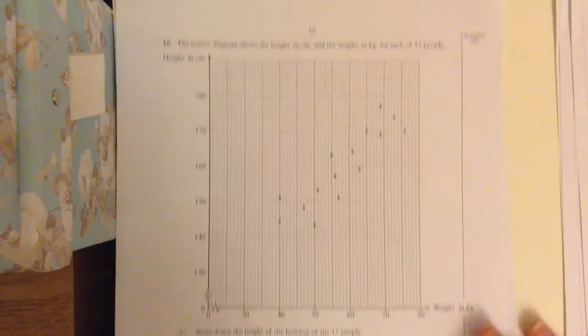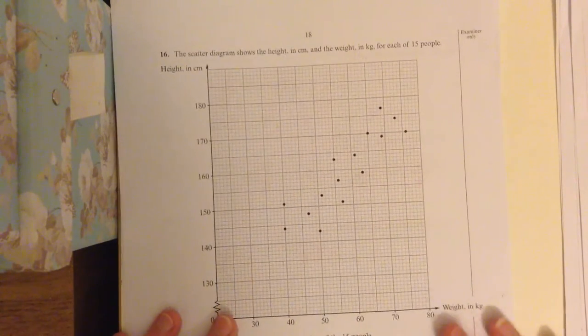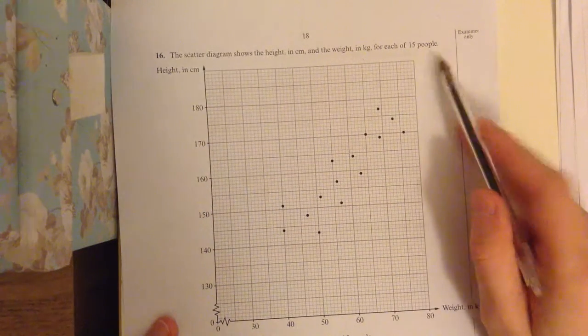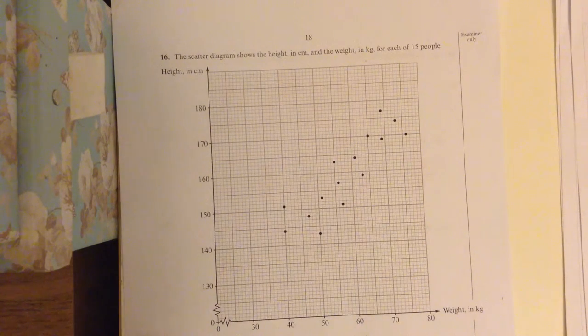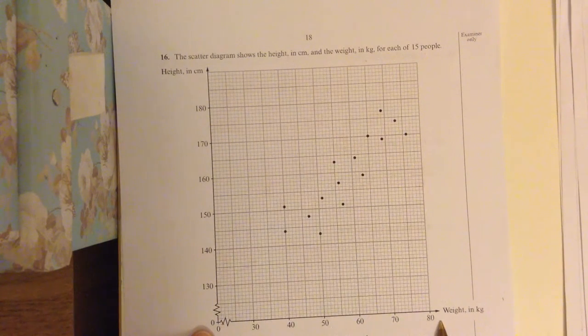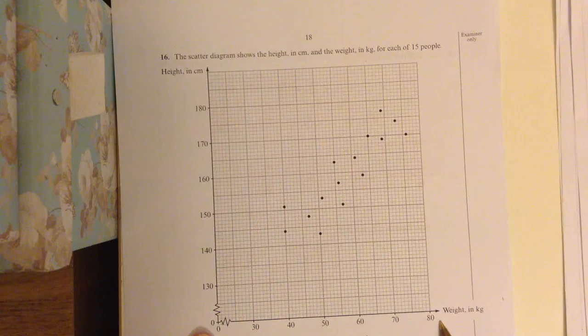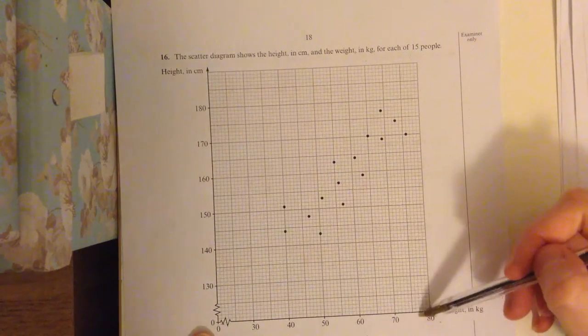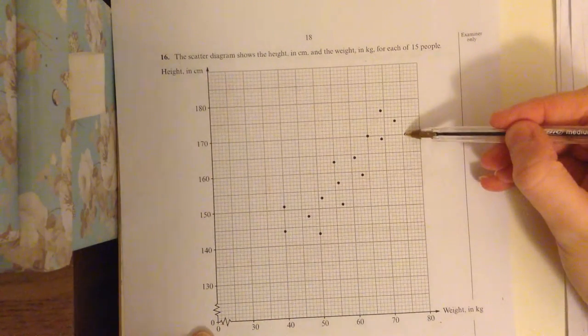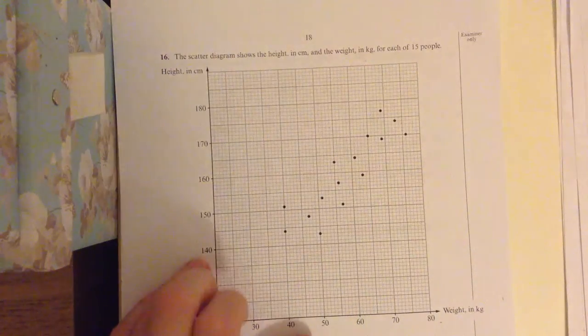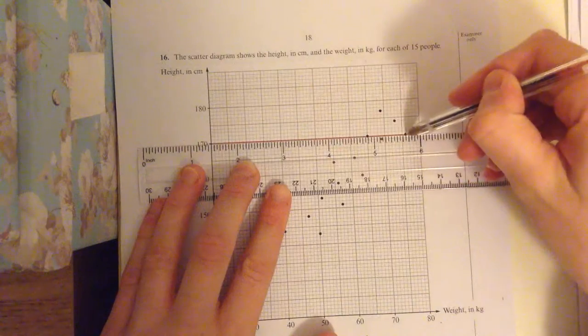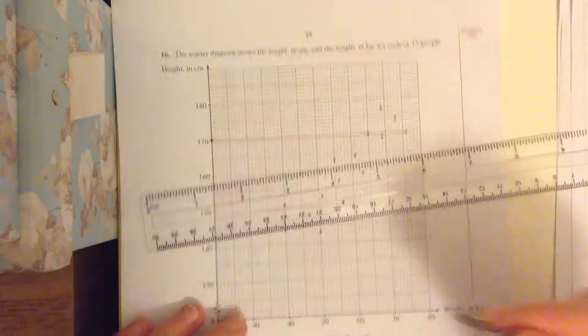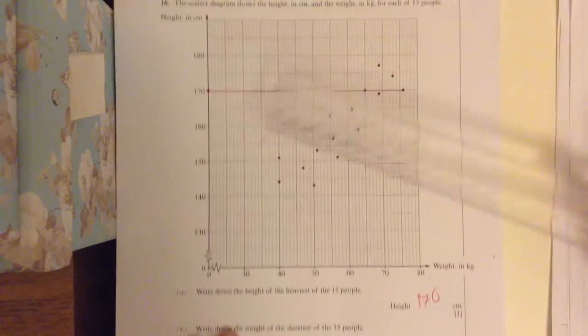Question sixteen. Scatter graph. Scatter diagram. It shows the height and weight of fifteen people. It's already drawn for you. Write down the height of the heaviest of the fifteen people. So heaviest weight is along the bottom. So find the heaviest weight. It's going to be this one here. Go up. If you need to use a ruler, do. Go across and find out how high was that person. So that person was a hundred and seventy centimeters.